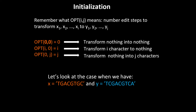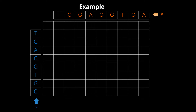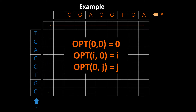Let's look at an example where x is some DNA sequence and y is some other DNA sequence. We form a matrix with y along the top and x along the side. For initialization, the first cell (0,0) means transform nothing into nothing — cost 0. Moving along the top row, transforming nothing into 'tc' is cost 2, cost 3, etc. Moving down the first column, transforming 't' into nothing costs 1, transforming 'tg' into nothing costs 2, etc.